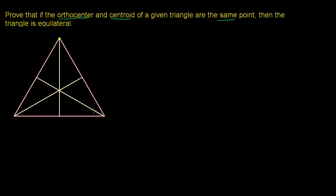So I have a triangle over here, and we're going to assume that its orthocenter and centroid are the same point. As a review, the orthocenter is the point where the three altitudes of a triangle intersect, and the centroid is the point where the three medians intersect. So we can assume that these three lines are both altitudes and medians, and that this point is both the orthocenter and the centroid.